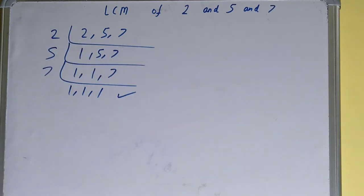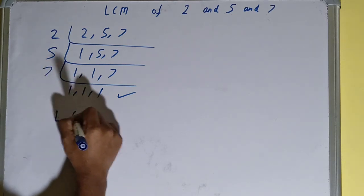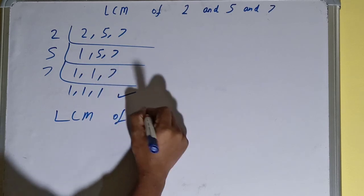Once you get all ones, you need to stop and do one last thing. The LCM of 2, 5, and 7 is equal to multiplying whatever you have on the left-hand side.